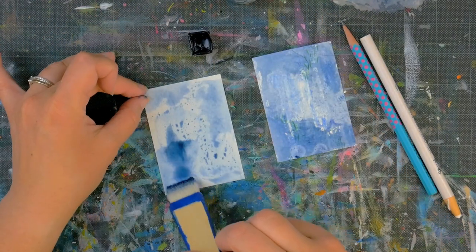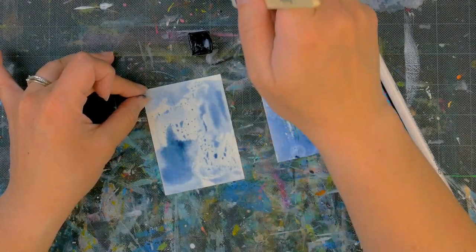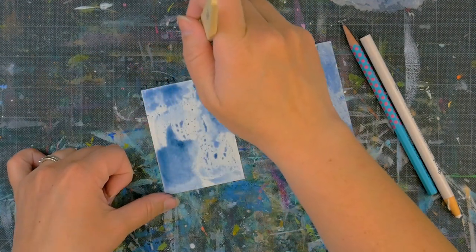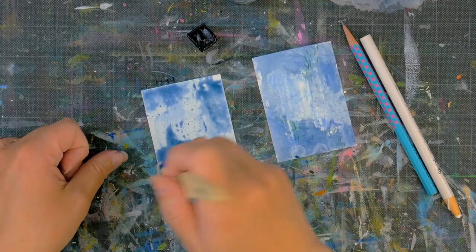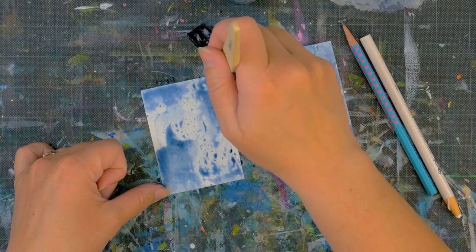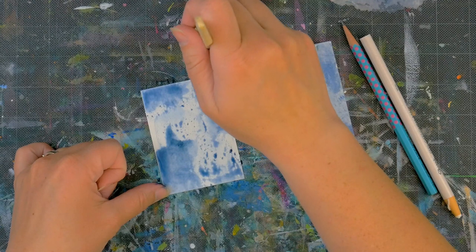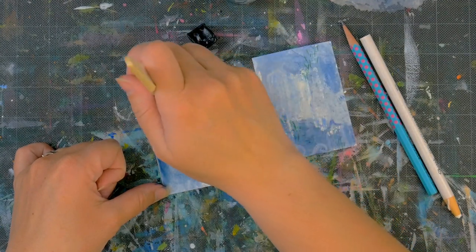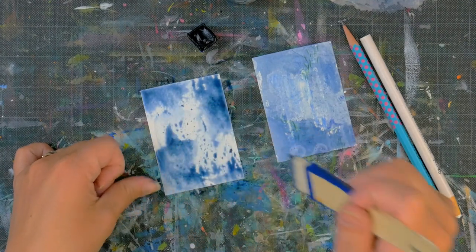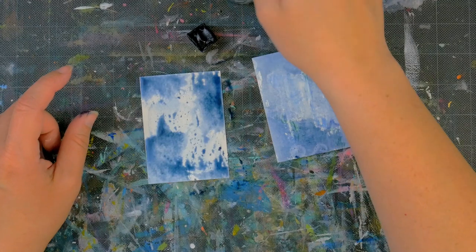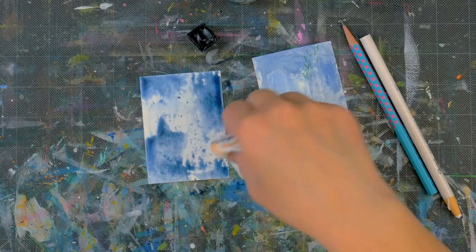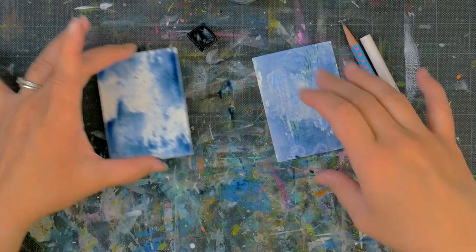We're going to apply color to this one while this one's drying. You can see where it's resisting. Just blot a little bit in those resist areas. Now we're going to let this one dry.